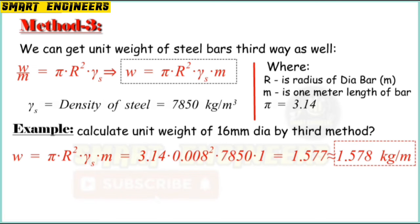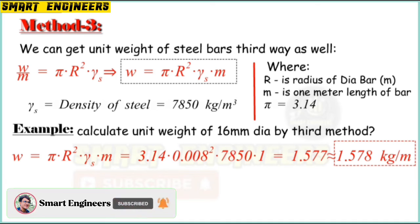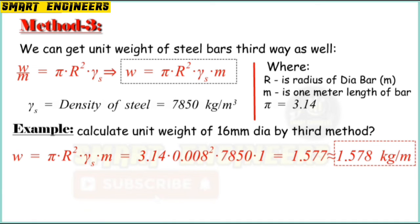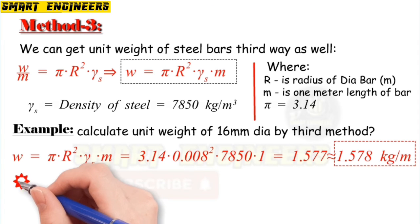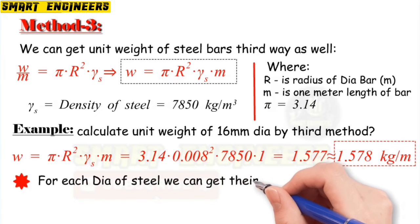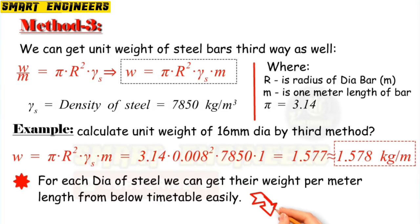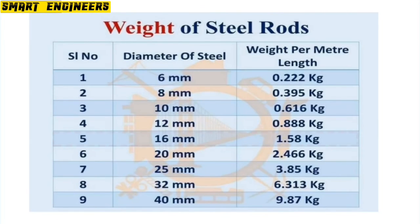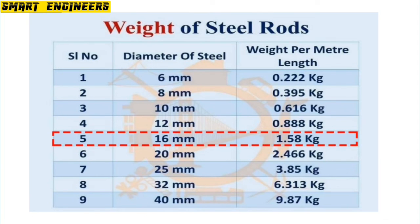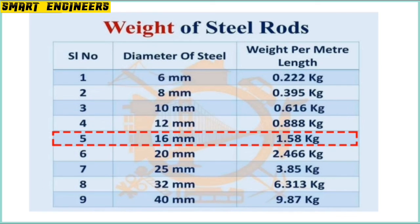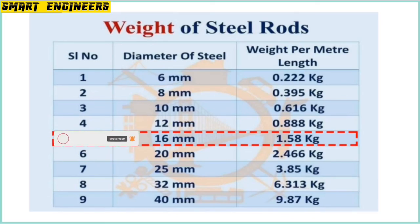From three different methods we get the same result. We can get the unit weight or the meter length weight of steel bars by these three methods. Whichever is the easiest and your favorite way, you can use the method that you want. If you want to easily get the unit weight of steel bars from a table, I will drop here a timetable of the unit weight of steel bars. You can see the weight for different diameters — for the 16 millimeter dia bar, the result is 1.58 kg. Please subscribe to my channel. Thank you very much.